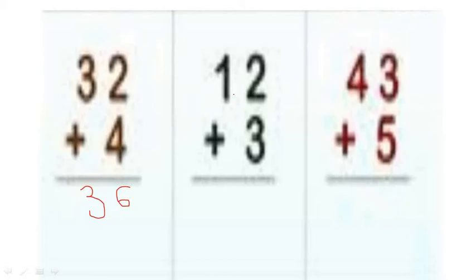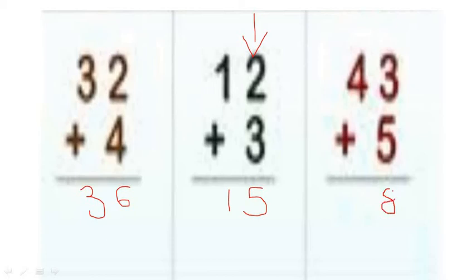Now we have twelve plus three. First, start with the one's column — two plus three. By adding three to two, start counting after two: three, four, and five. We get number five. One plus zero, we get number one. So we can say that twelve plus three gives us number fifteen. Next — forty-three plus five. By adding five to three, we get number eight. By adding zero to four, we get number four — so the answer is forty-eight.